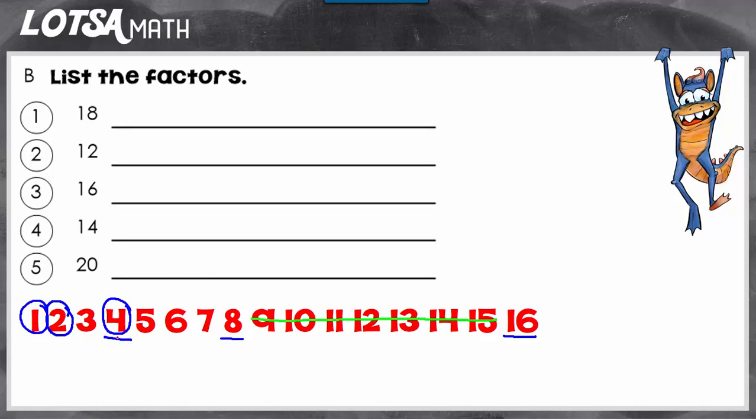So now I know that I'm finished because I've had my factor meetup, my circles have met up with my underlines, and I'm done. So the factors of 16 are 1, 2, 4, 8, and 16.